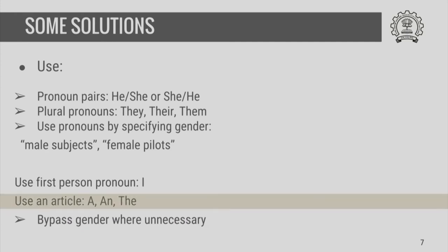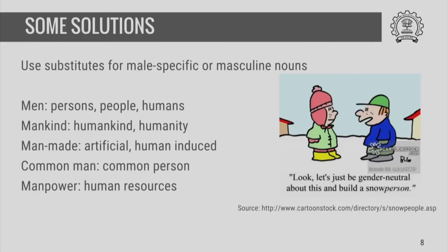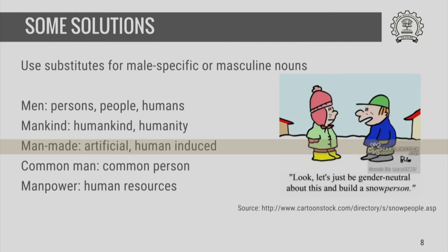Sometimes we can bypass gender where necessary by replacing masculine or feminine pronouns such as he or she with the indefinite article a or an, or the definite article the. Specific examples are available in the resources at the end of this module. One could use a variety of substitutes available for male-specific or masculine nouns. The non-availability of terms should not be used as an excuse to continue to use male-specific nouns and pronouns. We do have alternative substitutes to refer to all human beings, such as common person, artificial for man-made, and humankind for mankind.